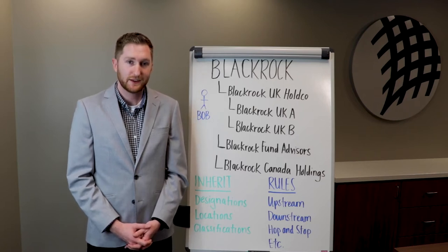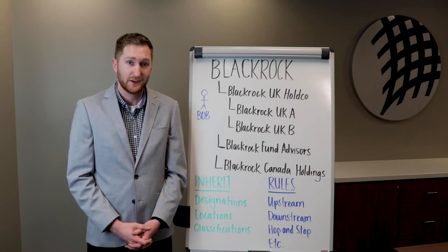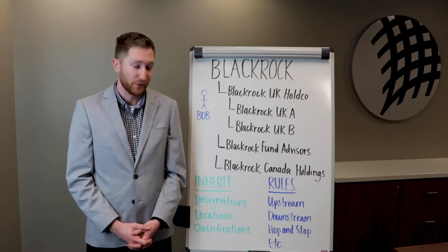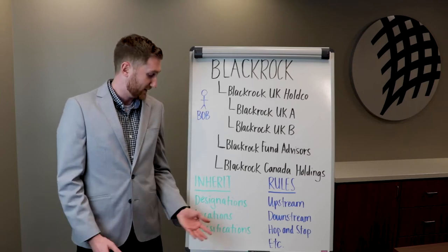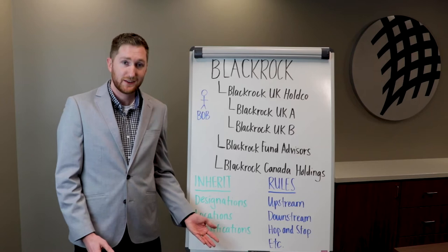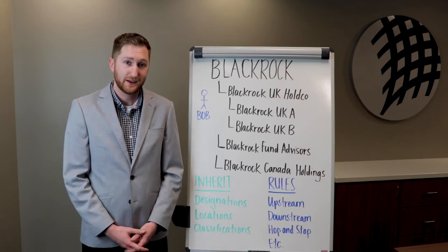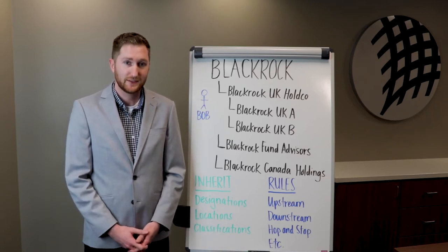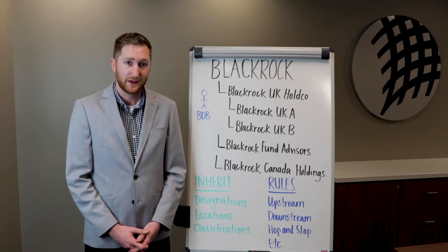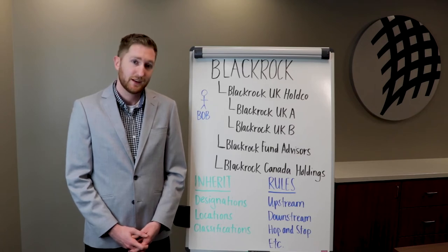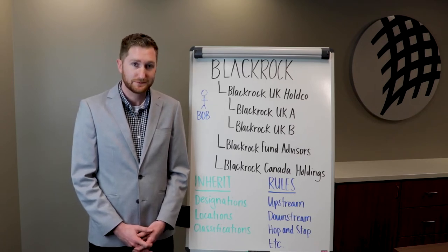This specific technology is known as inheritance, and through inheritance we automatically cascade data points — such as designations specific to the public accounting space, locations, classifications, and more — up and down a legal entity's hierarchy. Let's look at the whiteboard for an example.